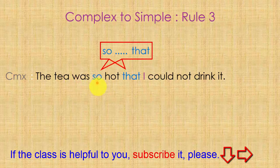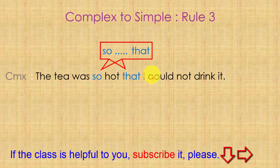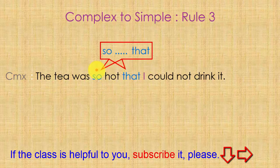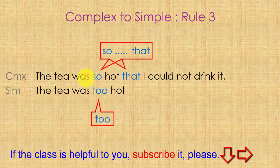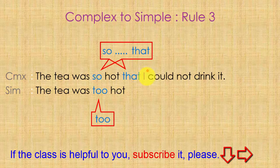Rule 3. This sentence is also linked with 'so...that,' but there is a difference. The subject of the main clause is 'the tea' and the subject of the subordinate clause is 'I' — two different subjects, one is a thing and another is a person. If your sentence contains two different subjects and is linked with 'so...that,' there are slightly different rules.